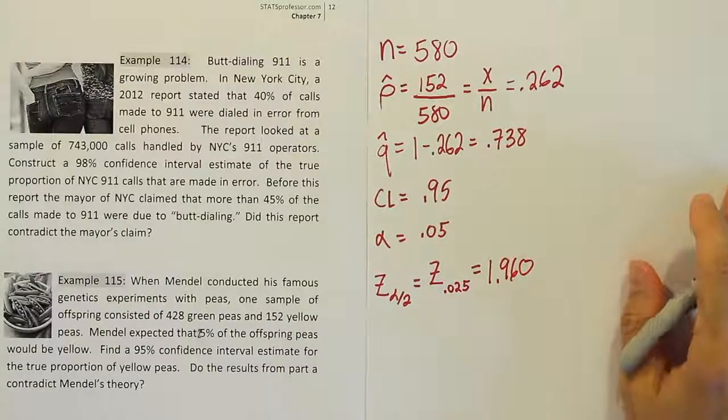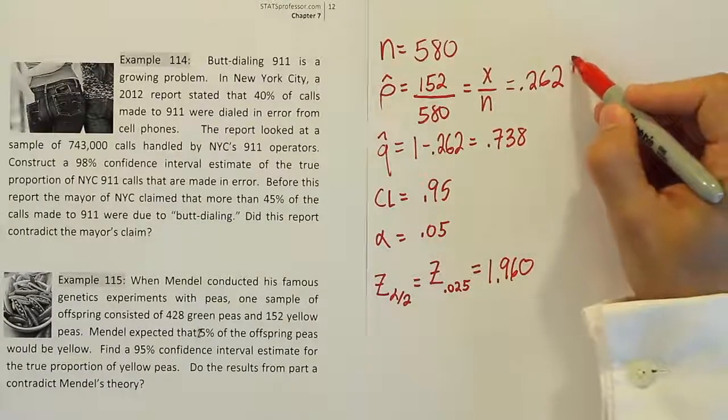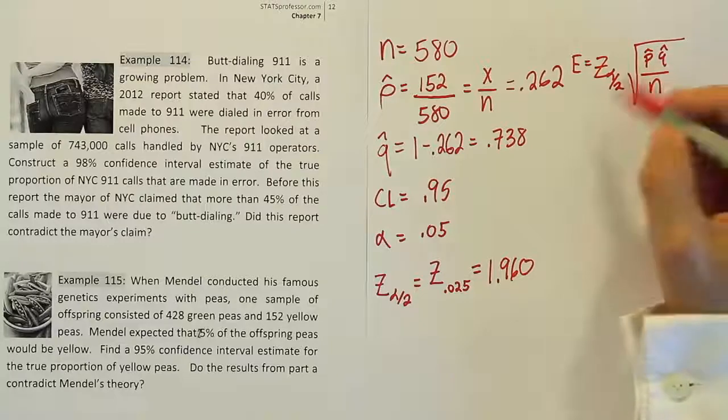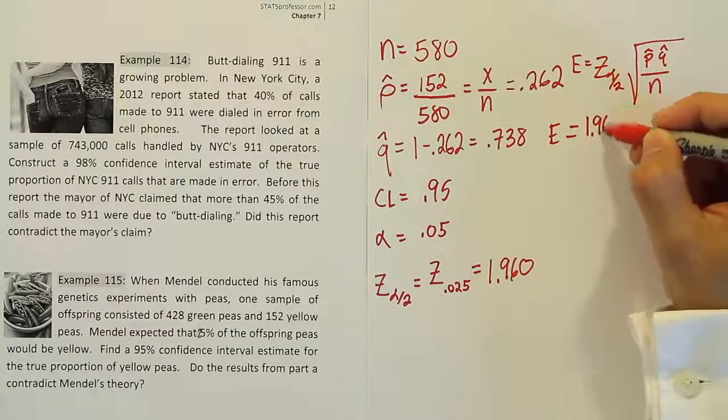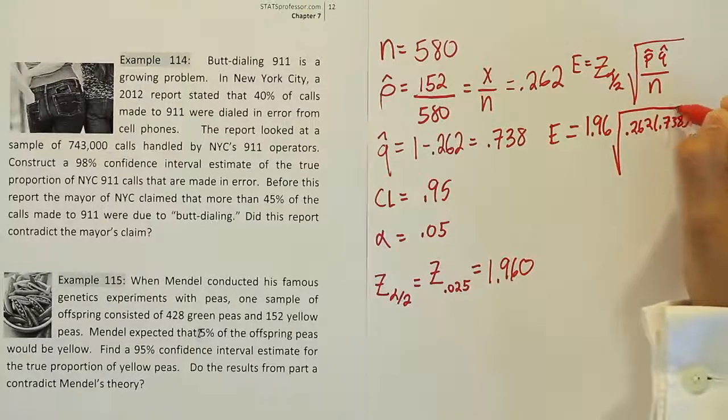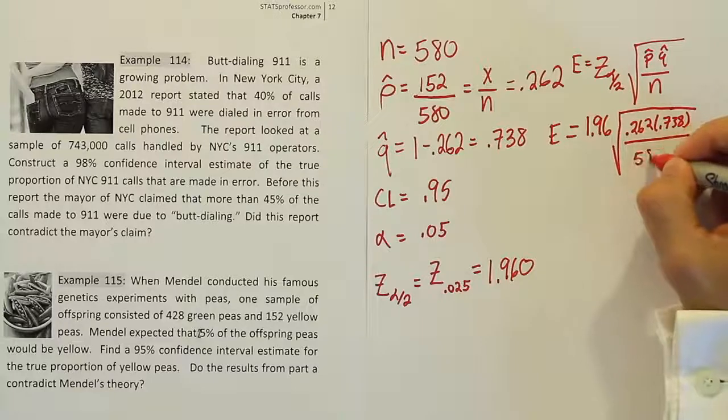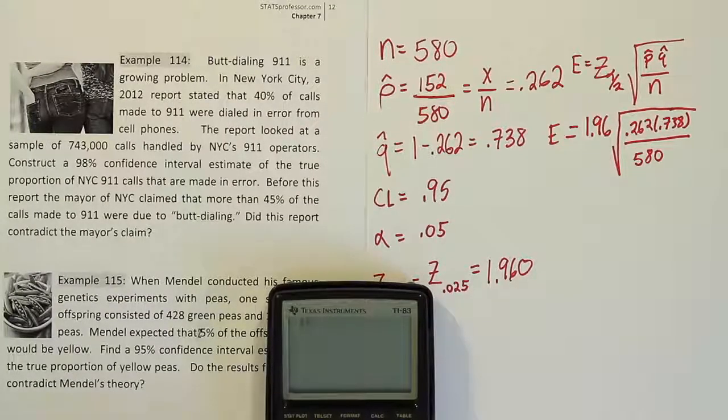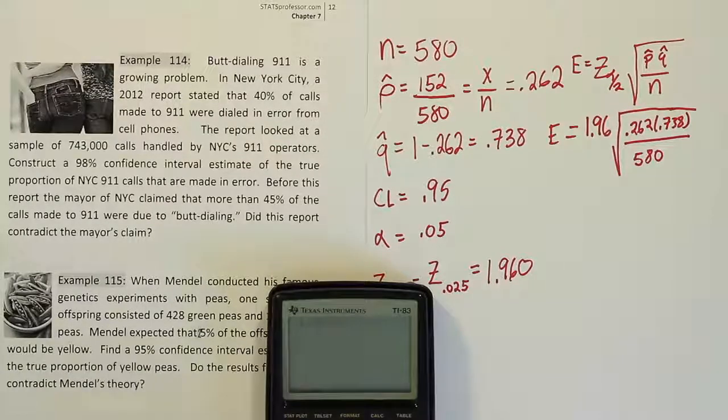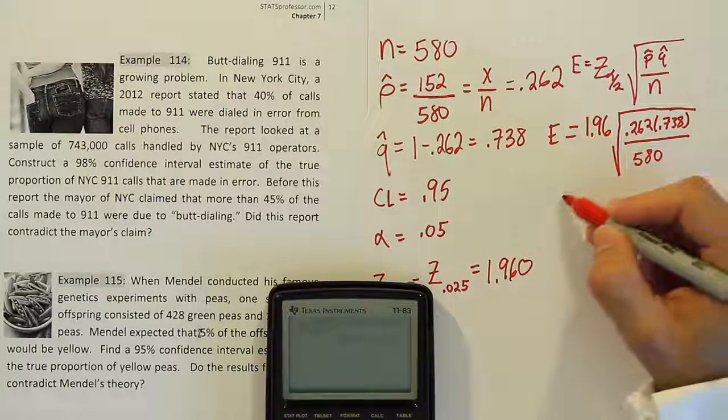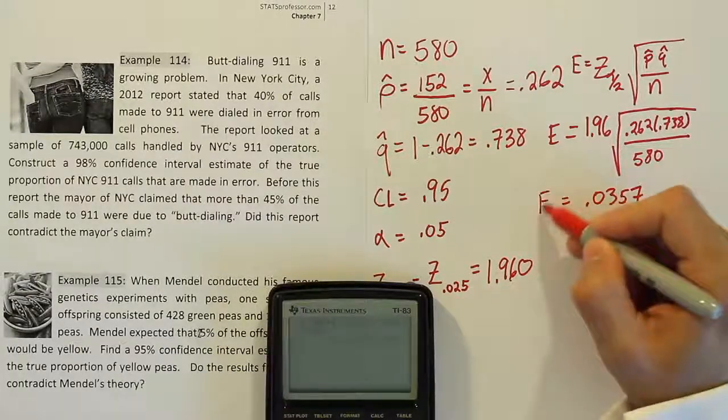So we found the answer for our z-score to be 1.960. Once we have that value, our next step is to get the margin of error, so let's go ahead and do that. The margin of error, remember, is a formula that says z alpha divided by 2 times the square root of p-hat q-hat over n. So in our case, it's 1.96 times the square root of 0.262 times 0.738. And once you have that in there, you're going to divide by the n, which is 580. So let's work that out in our calculator and see what we come up with for that answer. So, we have 1.96 times the square root of 0.262 times 0.738 divided by 580. Close up your parentheses, hit enter, and you get the answer 0.0357. That is our error.